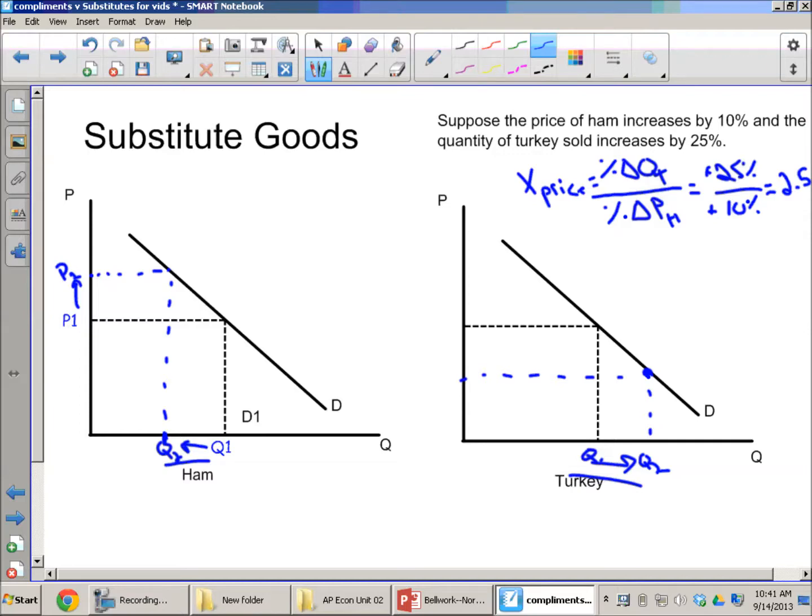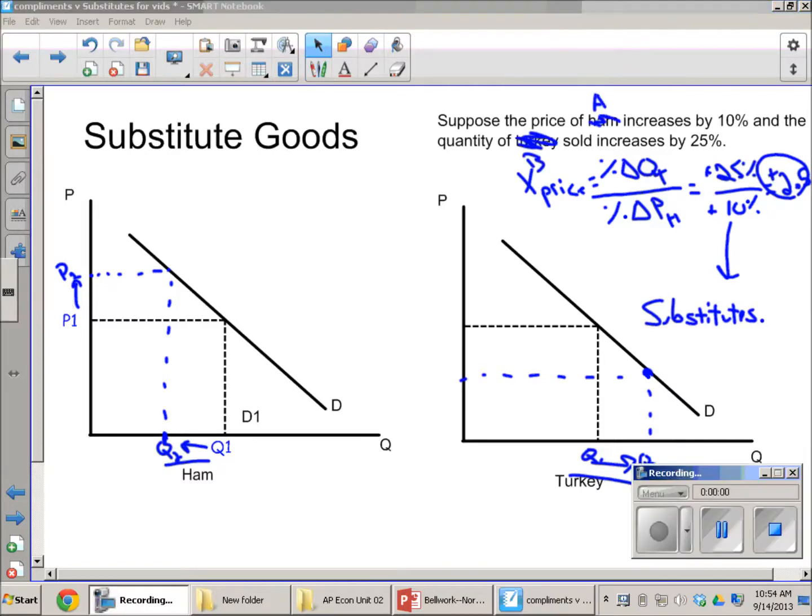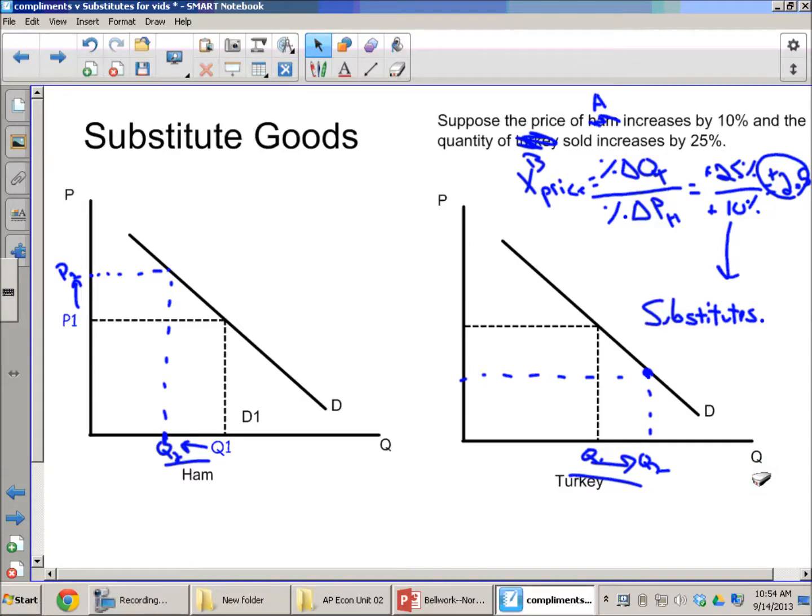So the cross price elasticity of demand here is 2.5. That answer is a positive number, and when you get a positive number—because again, both signs are positive here—that means that the two goods are substitutes.